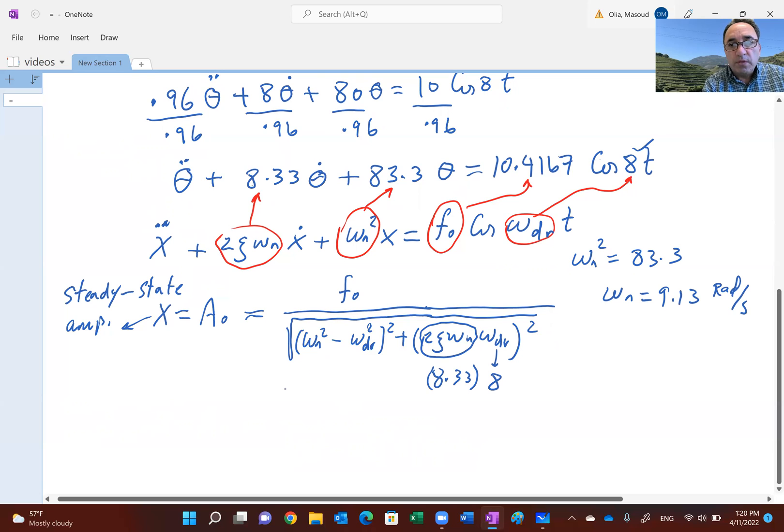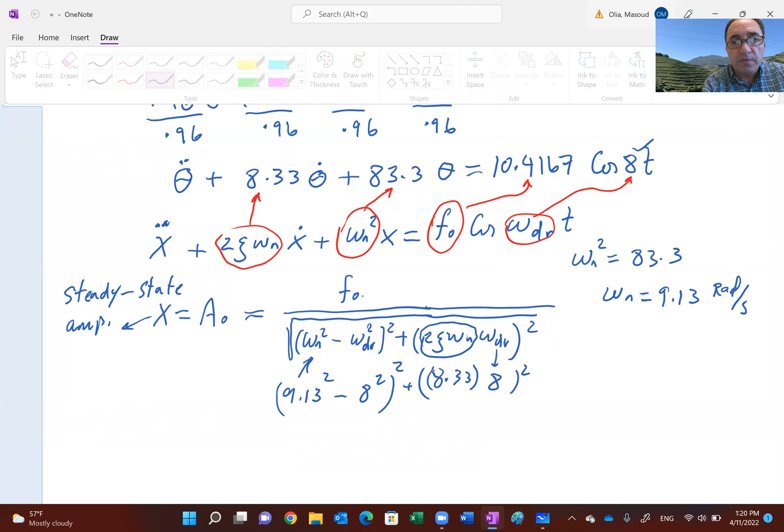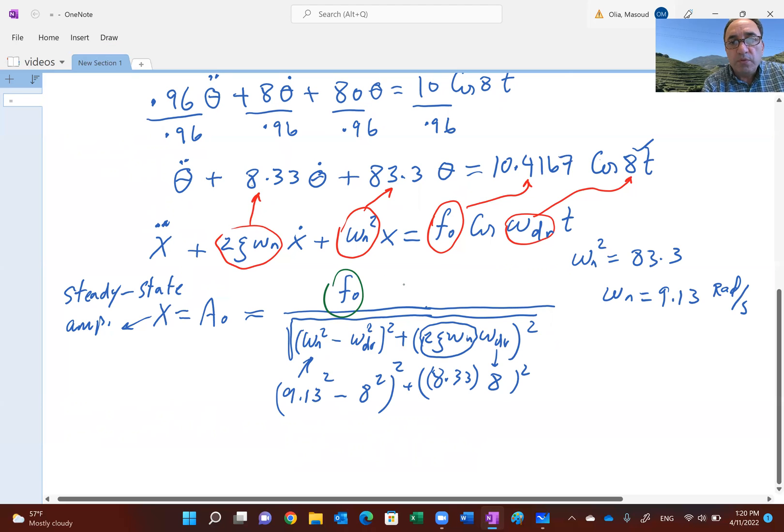If you put 9.13 squared, then minus 8 squared, then the whole thing is squared. Then go through this process of squaring this. What is your F_0? Your F_0 is 10.4167. Just a quick calculation, and your steady-state amplitude should come out to be about 0.15.